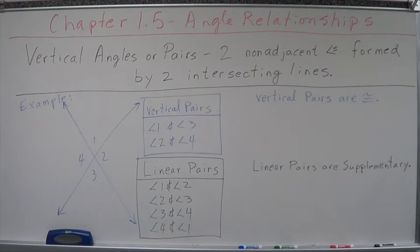Vertical pairs are the non-adjacent pairs. What are the non-adjacent pairs? They're not next to each other. They do not have common sides. They do have a common vertex. So what are the non-adjacent angles? Angle one and angle three, they're a vertical pair. Angle two and angle four, they're a vertical pair.